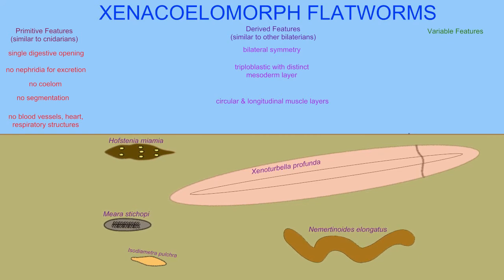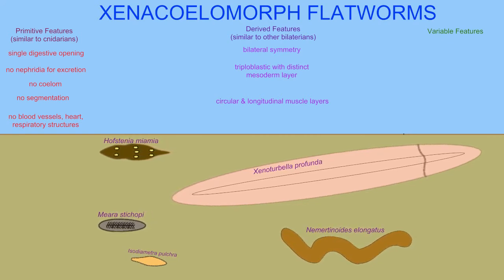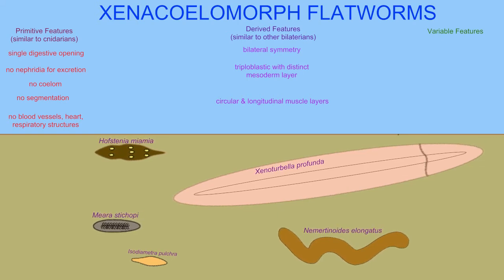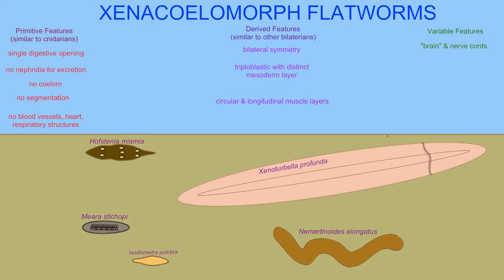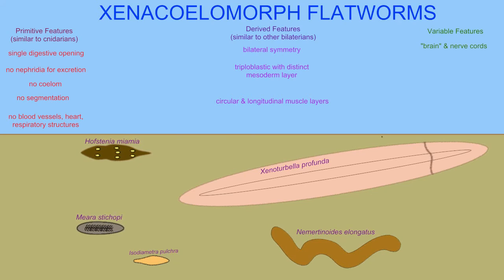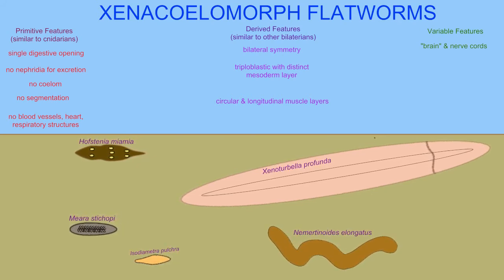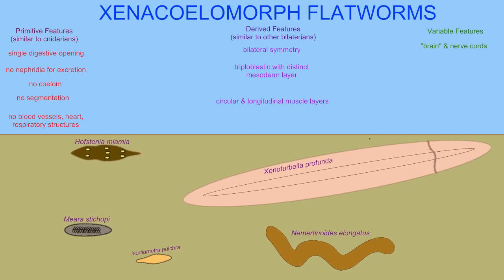There are a few traits in this group which vary. While most members of the group do not possess a brain or nerve cords, instead possessing only a nerve net like cnidarians, there are concentrations of neural tissue in some, and nerve cords.